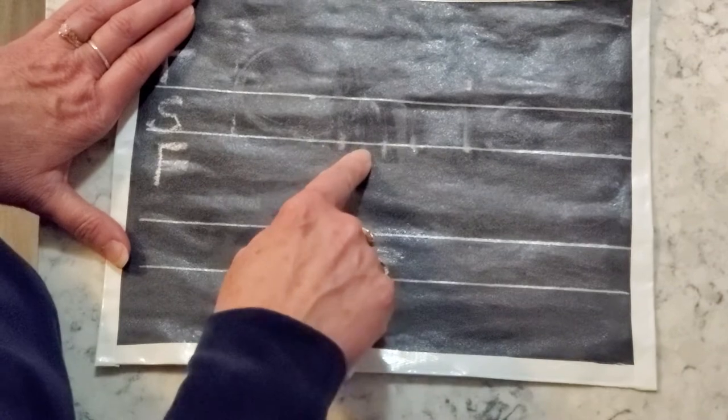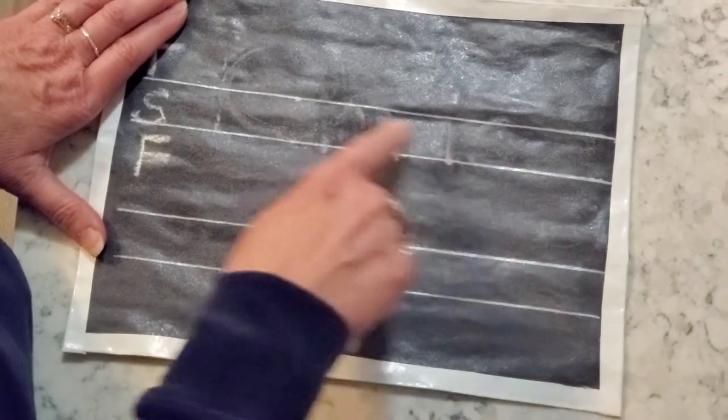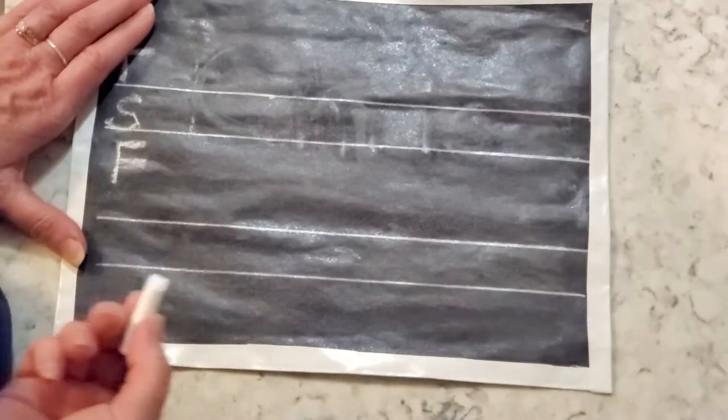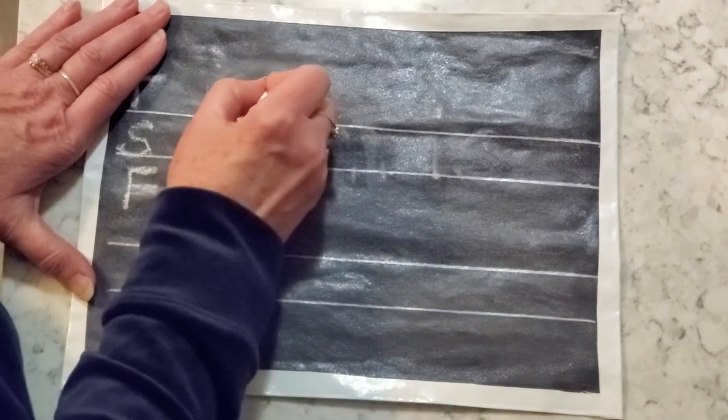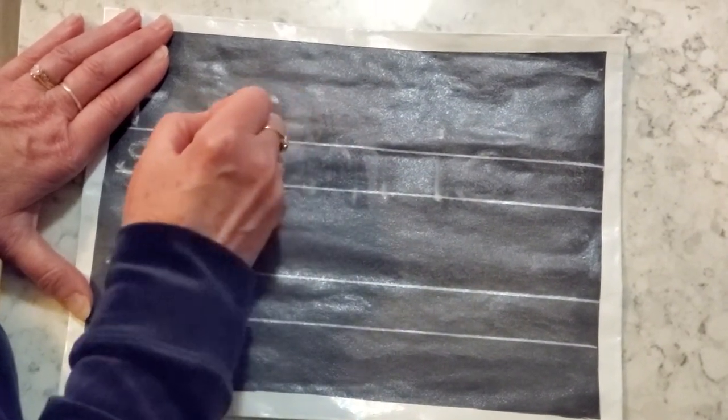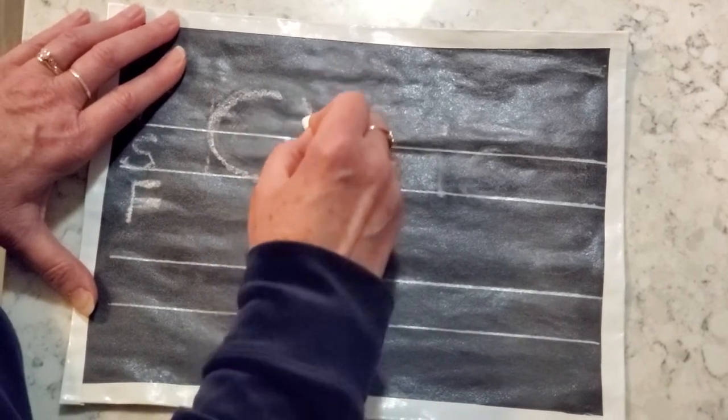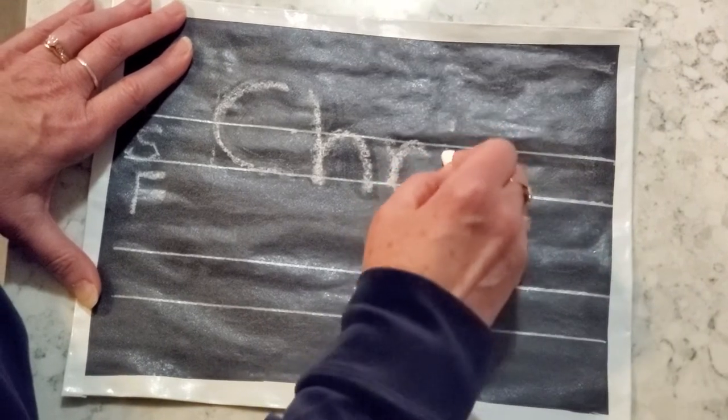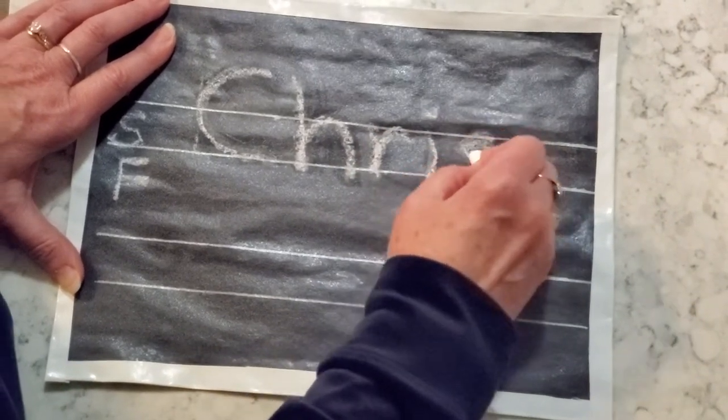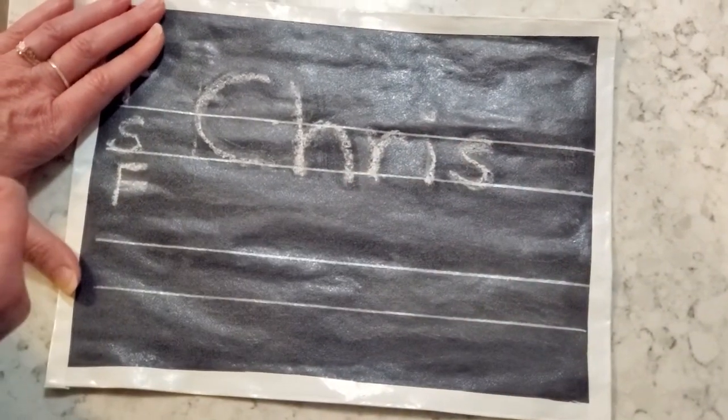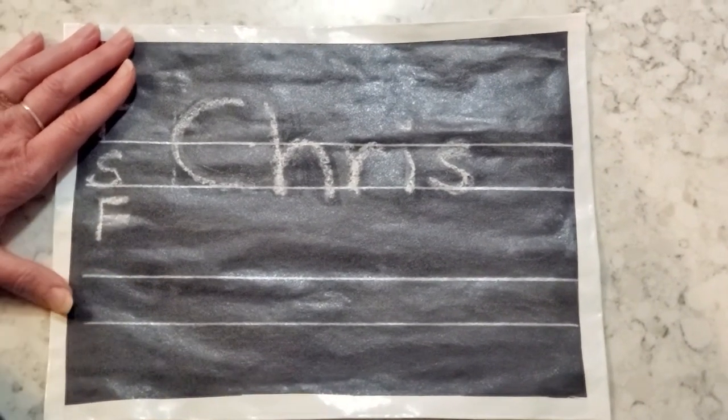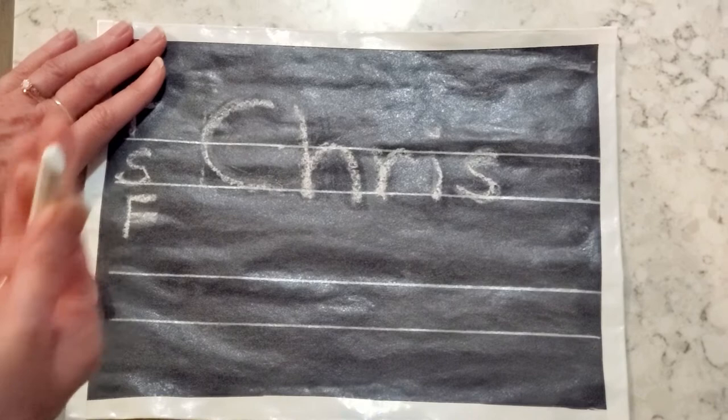Now you notice you can still kind of see the letters there. But that's exactly what we want because then it gives feedback for your child to go back and rewrite those letters. And that kind of guides them. And how this works is it allows your child to practice the letter formation by doing wet, dry and try. And that builds motor memory.